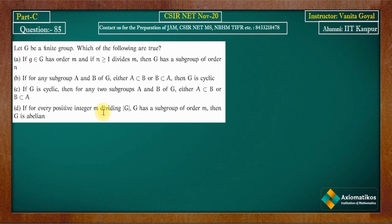Option B states: if for any two subgroups A and B of G, either A ⊆ B or B ⊆ A, then G is cyclic. So we have a finite group G where any two subgroups are comparable by inclusion, and we ask whether G must be cyclic.